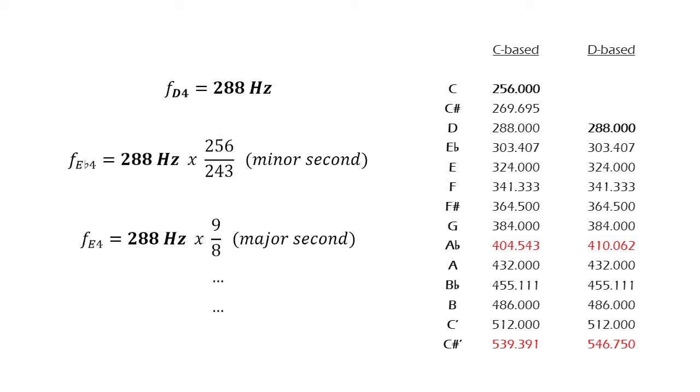This is why if a musical composition is transposed to a different scale in just intonation, some notes would sound out of tune compared to the original scale, which does not happen in equal temperament.